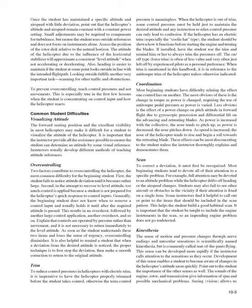Trim to Reduce Control Pressures. In helicopters with electric trim, it is imperative to have the helicopter properly trimmed before the student takes control; otherwise the term 'control pressure' is meaningless. When the helicopter is out of trim, some control pressure must be held just to maintain the desired attitude. If the helicopter has an electric trim, especially the coolie hat type, the student should be shown how it functions before starting the engine. The on/off type (force trim) is often left off by experienced pilots as a personal preference. When trim is mentioned in this handbook, it refers to the anti-torque trim of the helicopter unless otherwise indicated.